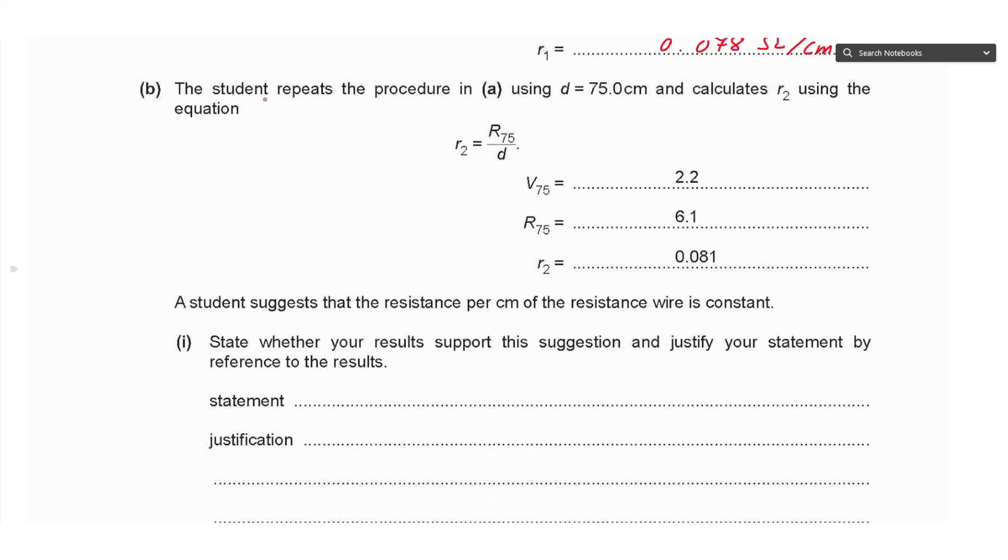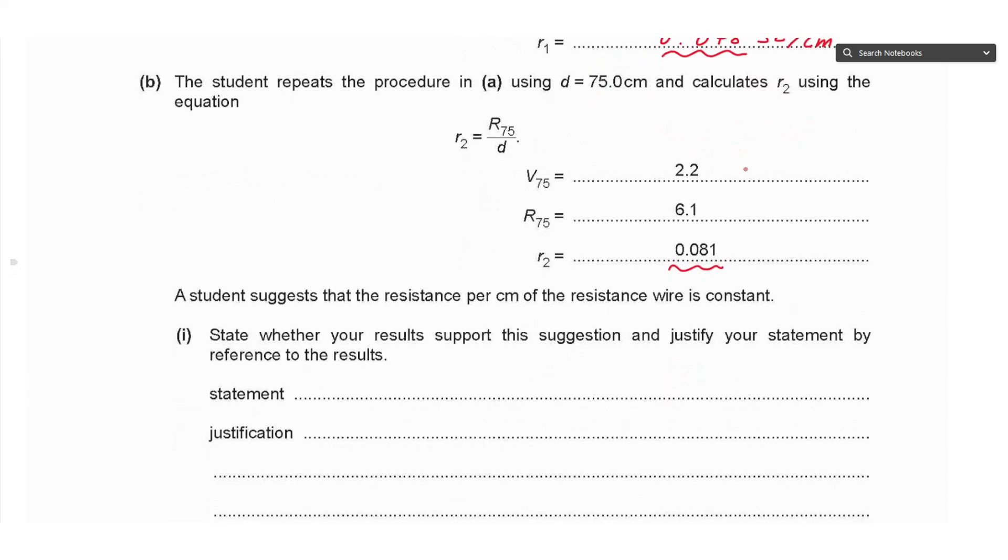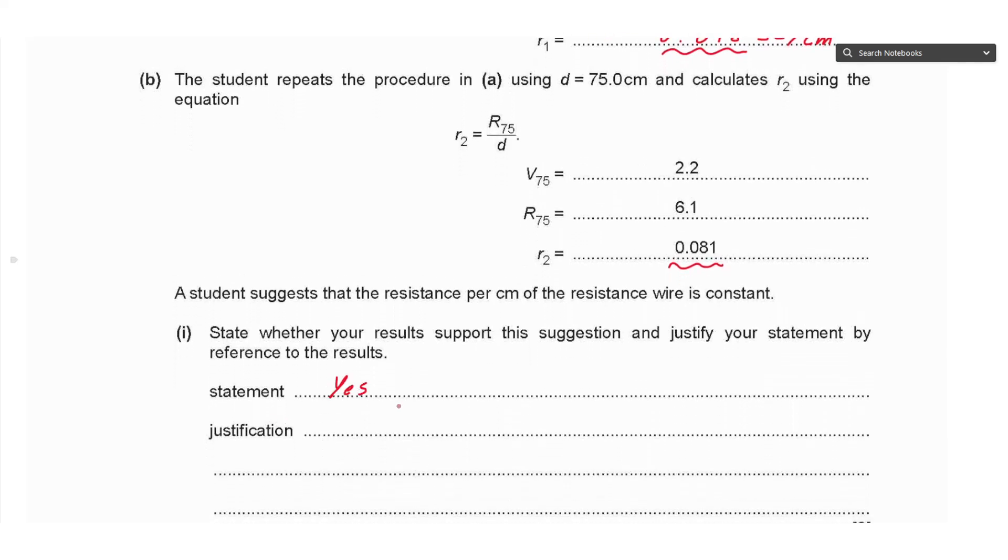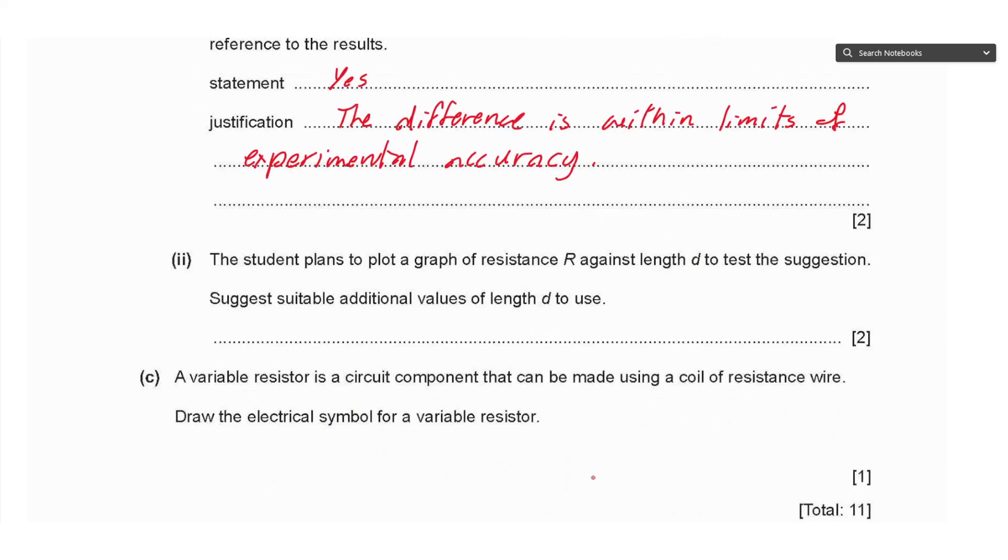Part B: The student repeats the procedure using d equals 75.0 centimeters and calculates R₂. A student suggests that the resistance per centimeter of the resistance wire is constant. We have two values, 0.081 and 0.078. State whether your results support this suggestion and justify with reference to the results. These values are approximately the same—the difference is very small. So we say yes, since the difference is within limits of experimental accuracy.